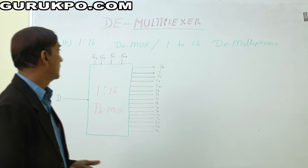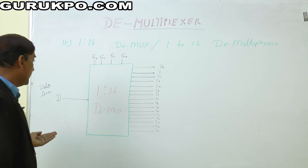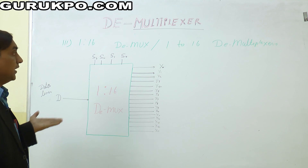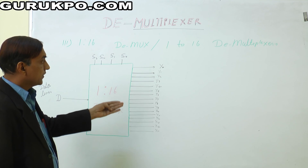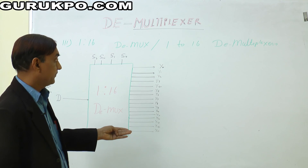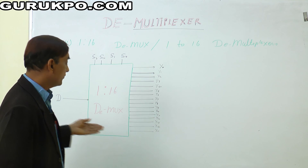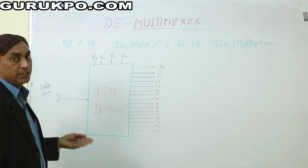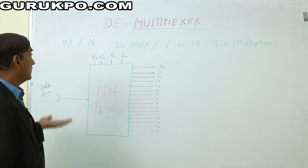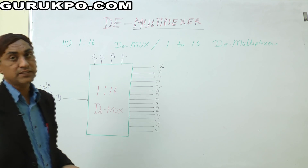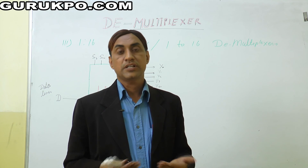The third example is the 1 to 16 demultiplexer. One data input line comes in, and there are four data selectors S0, S1, S2, and S3. The data output comes on 16 lines from Y0 to Y15. This is the block diagram of the three types of demultiplexer: 1 to 4, 1 to 8, and 1 to 16. To design these demultiplexers, we simply reverse the process of multiplexing.